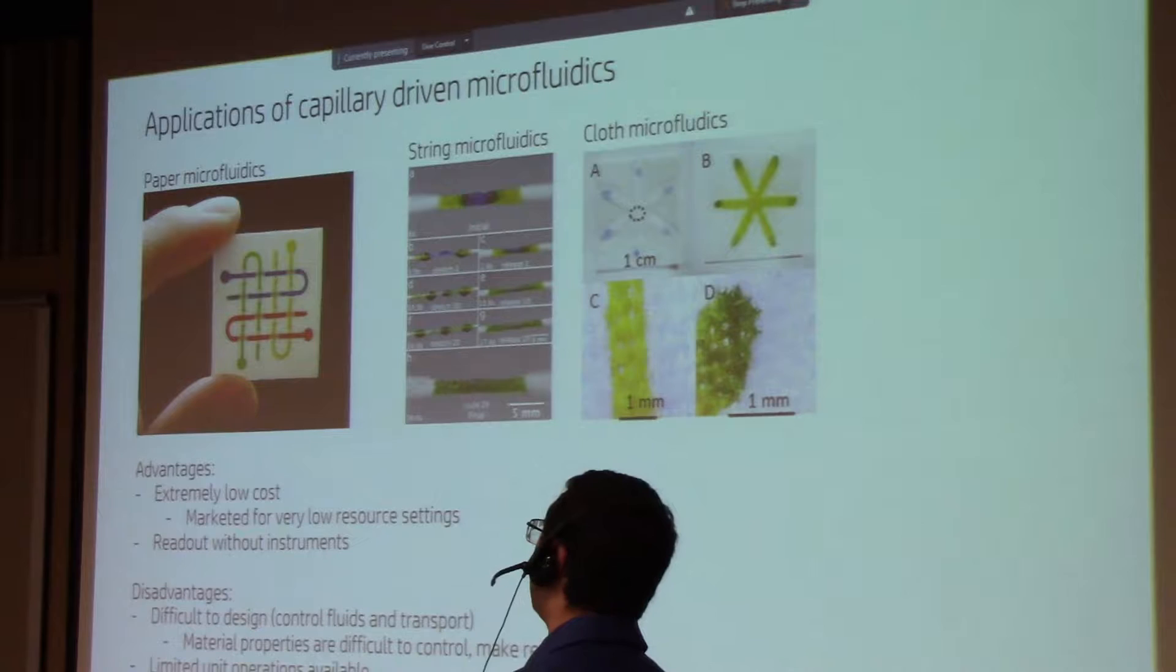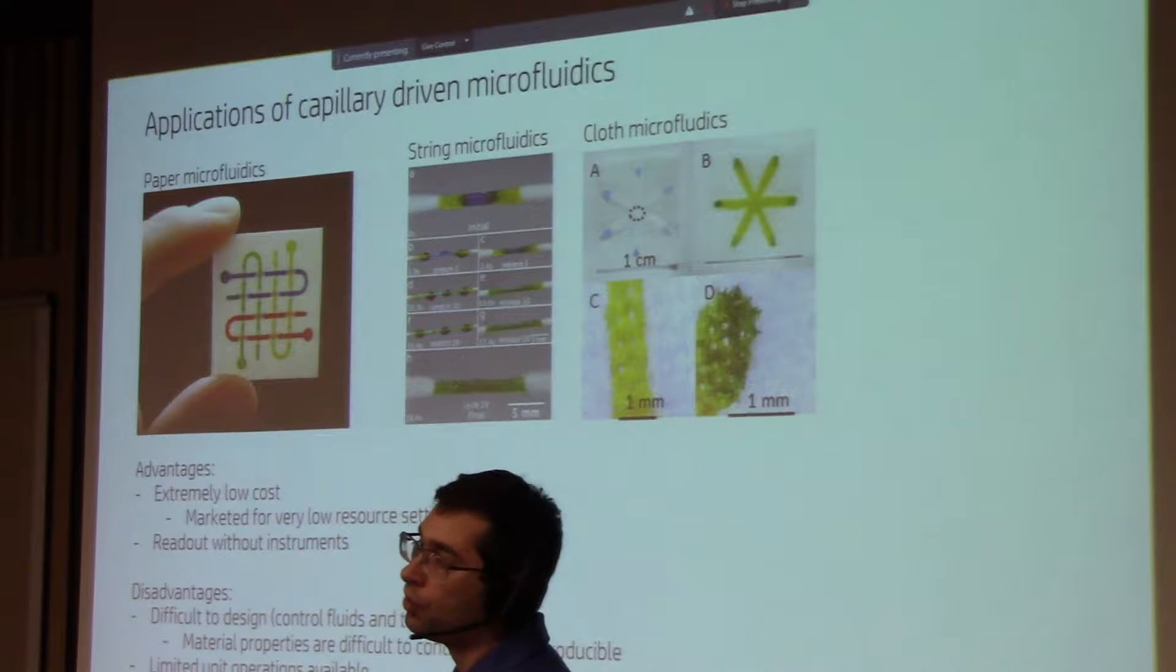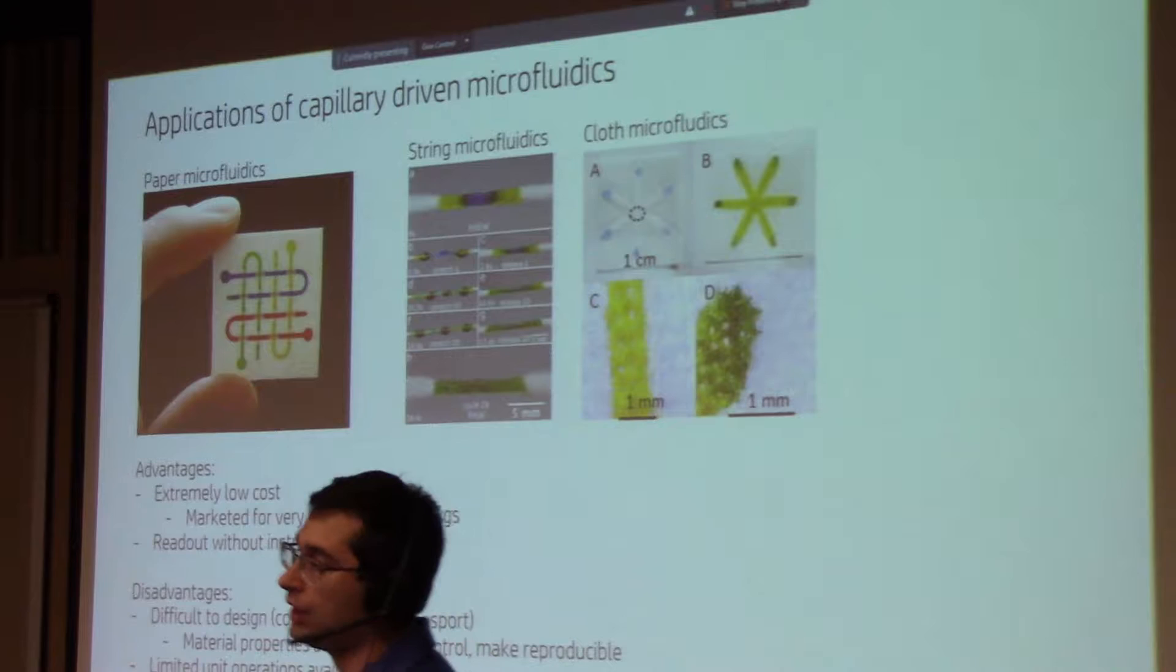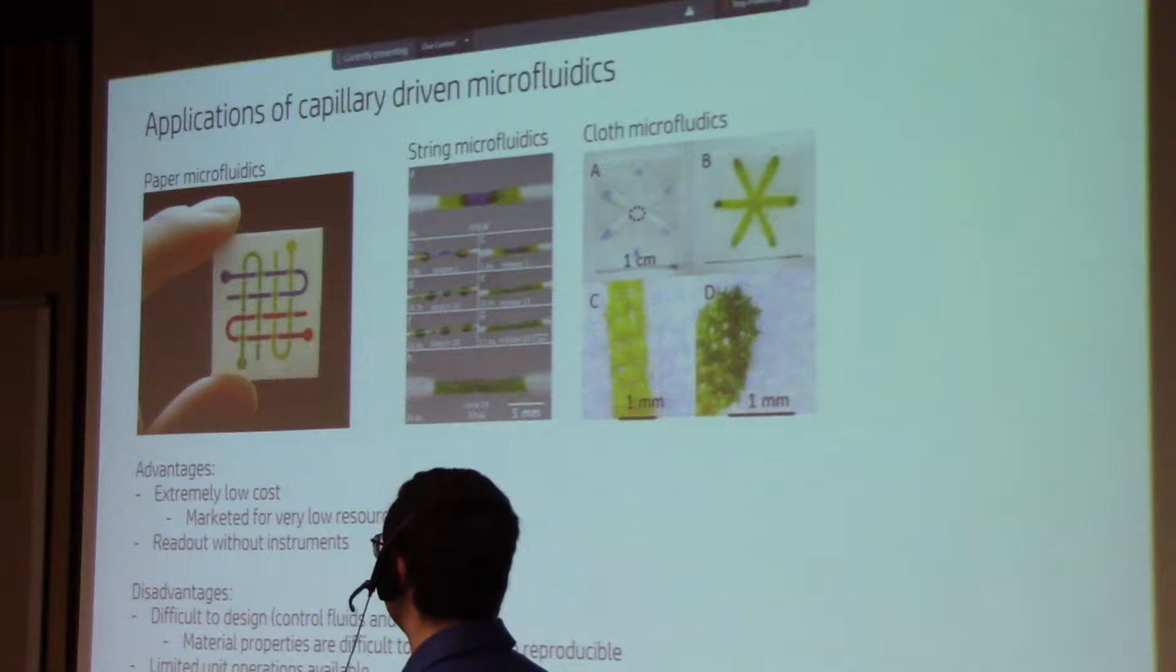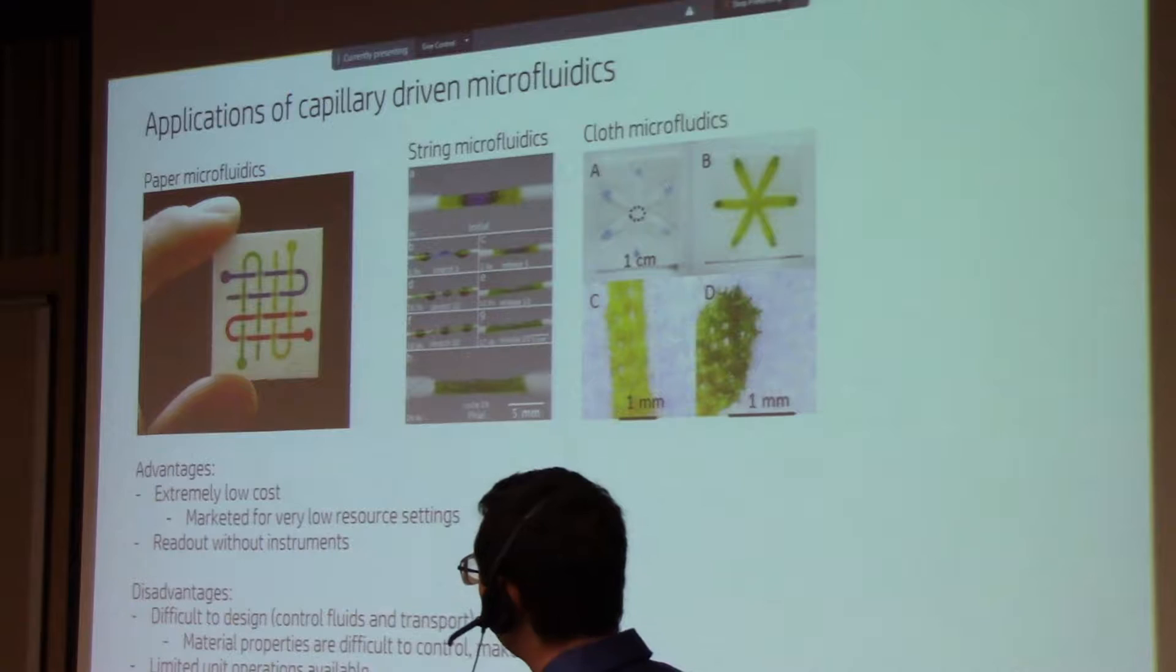However, there are significant disadvantages to these as well. They are fairly difficult to design because you rely on the surface properties of this paper. These surface properties often change. The surface properties of the sample or the wetting properties of the sample changes, maybe because of the disease state that the patient is in or the sample that you are trying to detect is in. And they make this fairly difficult to reproduce. So your flow rates might be different from run to run. You have to keep that into account.